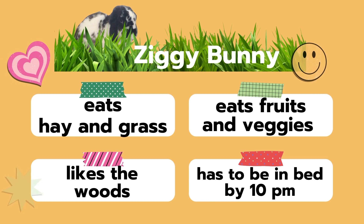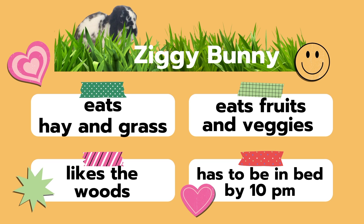On to the last set of clues. Up next we have the amazing Ohio Ziggy Bunny. The Ziggy Bunny eats hay and grass. It also eats fruits and veggies. It likes the woods, and it has to be in bed by 10pm. What is it? Think about the answer — is it a producer, consumer, or a decomposer? Reading your brain waves. Almost got it. Got it.